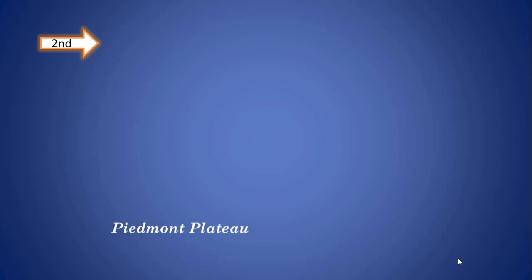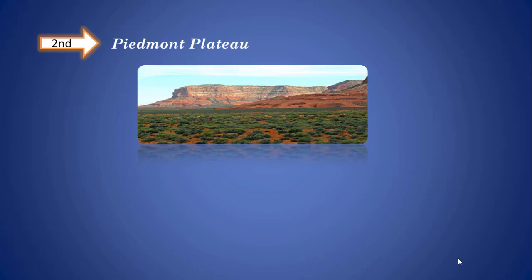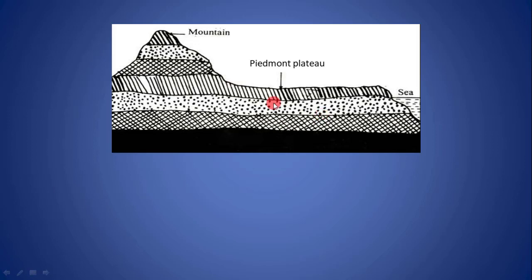Dear students, let's turn to the second type of plateau, that is the piedmont plateau. The word piedmont means foot of a mountain. Dear students, now look at this picture carefully. This raised land area is known as a piedmont plateau and it is situated in the foothills of the mountain. On the other side of it there is a sea, or it may have a plain area on its other side.